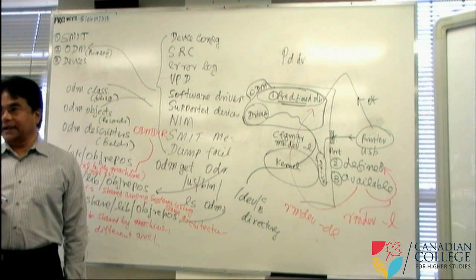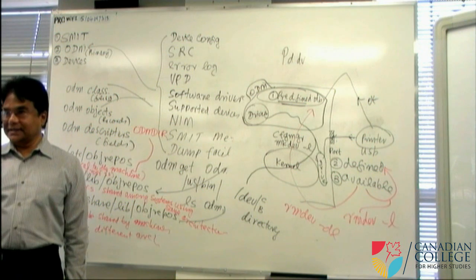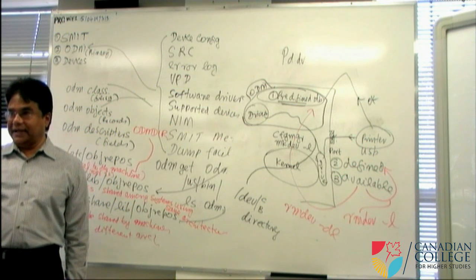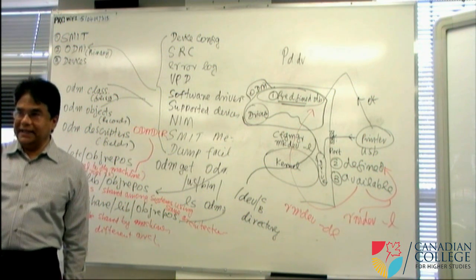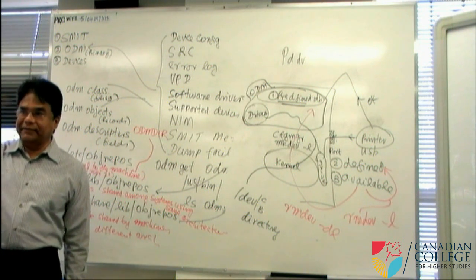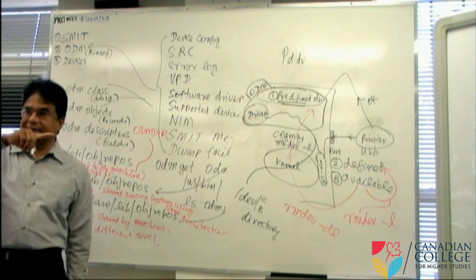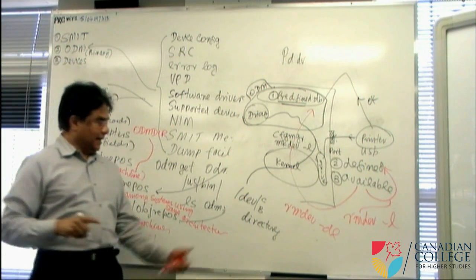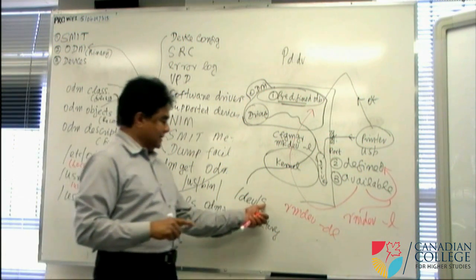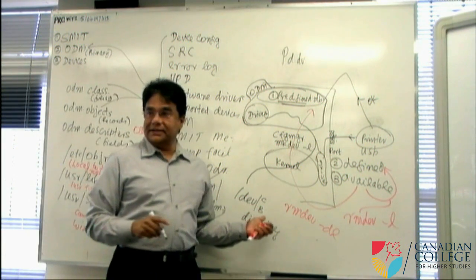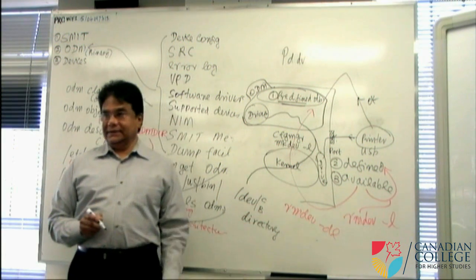A raw device and a block device. I showed you in the last lesson — when you go to 'dev1 ls -l', I saw C and D in the first character. So, character devices and block devices.